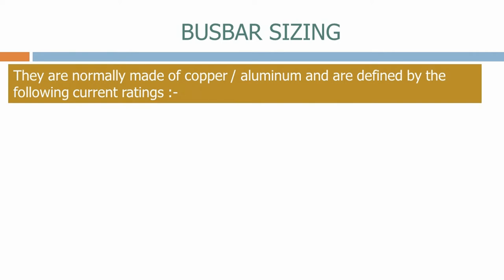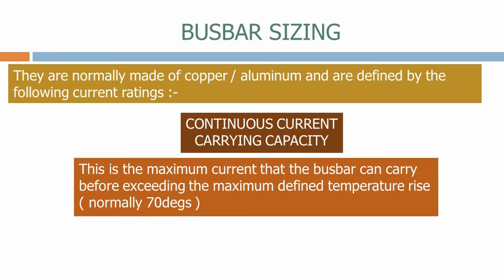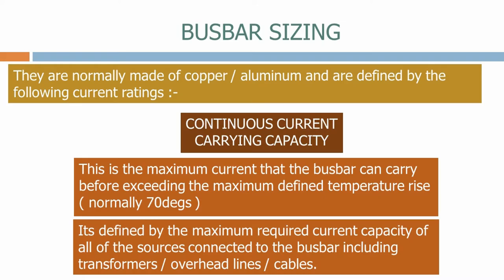They are normally made of copper or aluminium and are defined by the following current ratings. The continuous current carrying capacity is the maximum current that the busbar can carry before exceeding the maximum defined temperature rise, normally set at 70 degrees Celsius. It's defined by the maximum required current carrying capacity of all of the sources connected to the busbar, including transformers, overhead lines and cables. Most busbars on the electrical system range in capacity from 100 amps all the way through to 4000 amps.